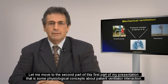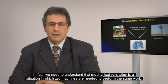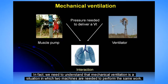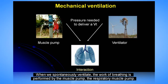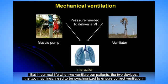Let me move to some physiological concepts about patient-ventilator interaction. We need to understand that mechanical ventilation is a situation in which two machines are needed to perform the same work. When we spontaneously ventilate, the work of breathing is performed by the respiratory muscle pump. When a patient is anesthetized, all the work of breathing is ensured by the ventilator. But in real clinical life, the two machines need to be synchronized to ensure a correct ventilation.